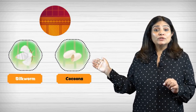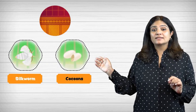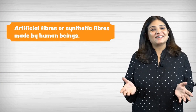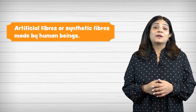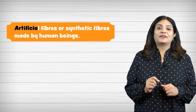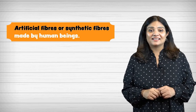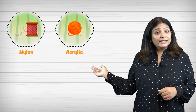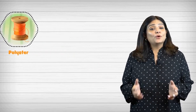Another example of animal fibers is silk. We get silk from the cocoons of silkworms. A cocoon is a covering made from smooth threads in which a baby silkworm lives. Human-made fibers are made by human beings. These fibers are also called artificial fibers or synthetic fibers. Some examples are nylon, acrylic, terry cotton, rayon, and polyester.